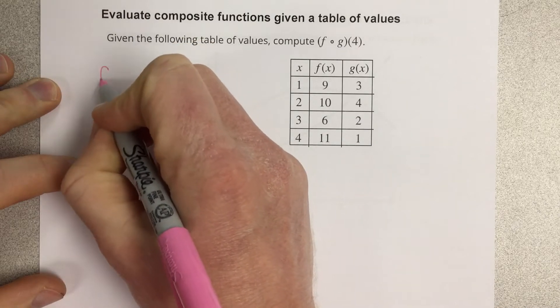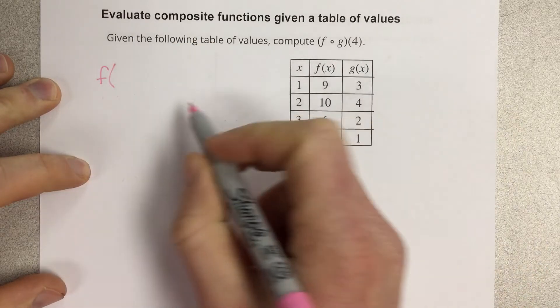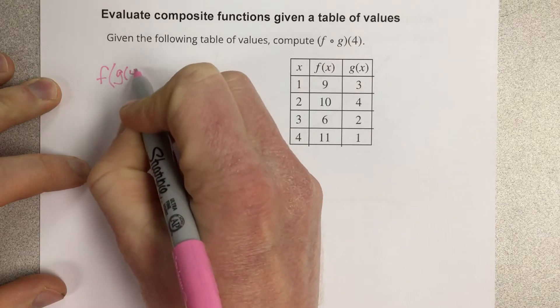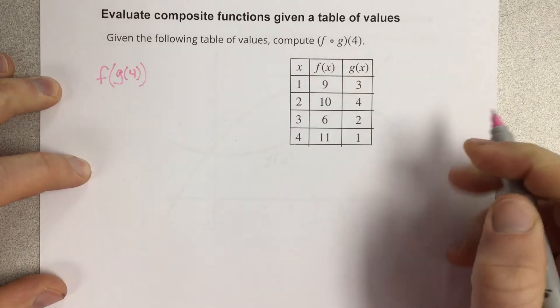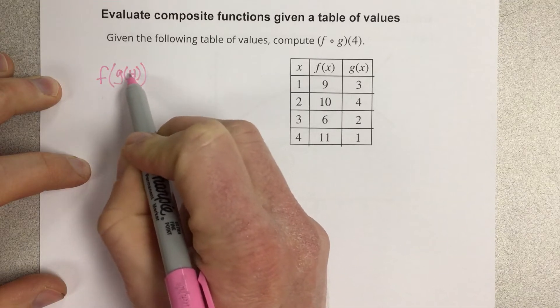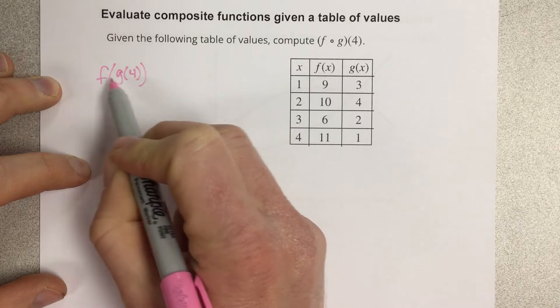Personally, I like to rewrite that in a better form. So f of g of 4 really is f with the input of g of 4. So I'm taking and evaluating the g function with an input of 4, and then I'm taking that value and I'm inputting it into the f function.